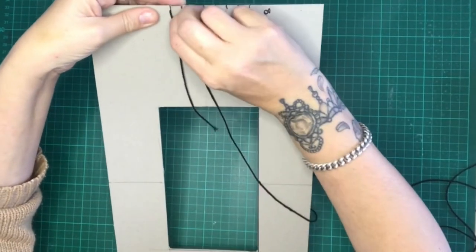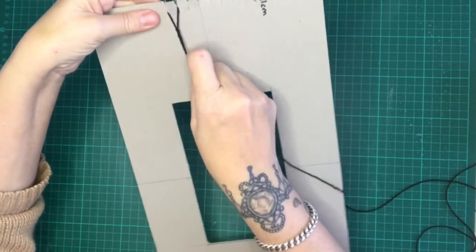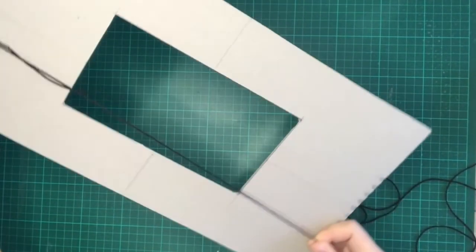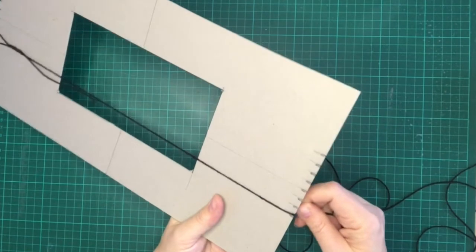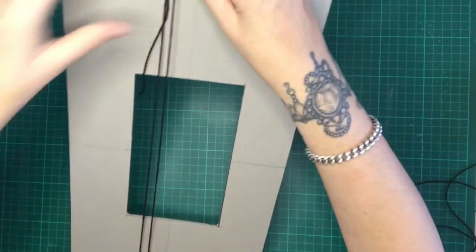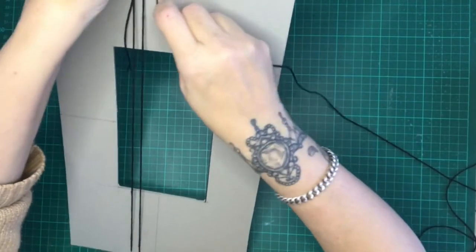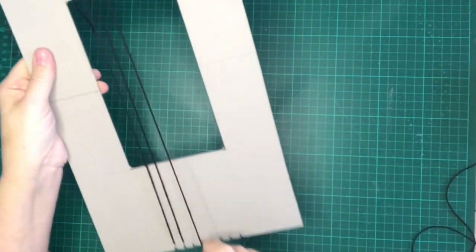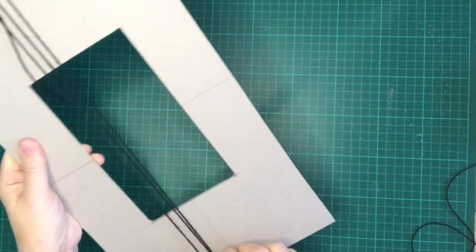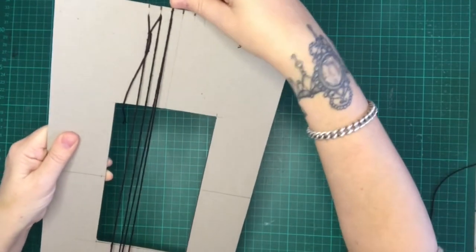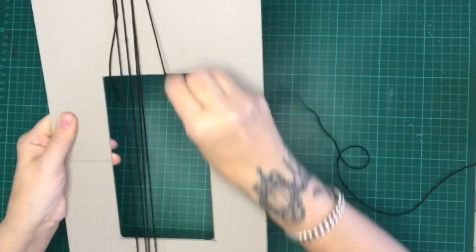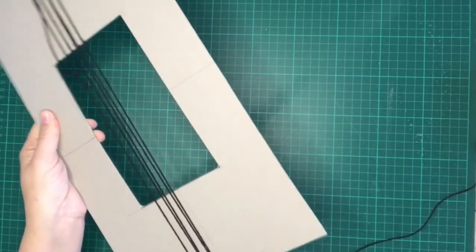Using a firm but not tight tension, you're going to guide the string down to the opposite notch and thread it through. Then bring it back up again and put it through the same notch. Then bring it around to the next and back to the same notch again.